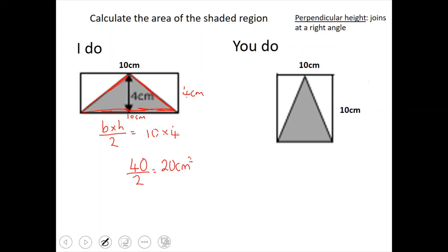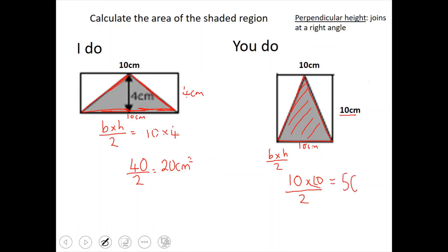Can you pause the video and have a go at this question for me please? Again we're looking at the shaded region — joining it together we should identify a triangle. Base times height divided by 2: the base is 10 centimeters, the height is 10 centimeters. So 10 times 10 divided by 2 gives 50 — please make sure you use the correct units — 50 centimeters squared.